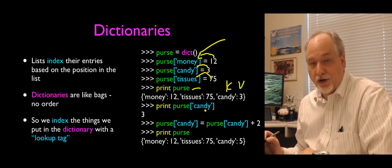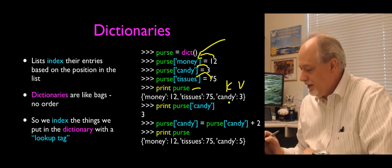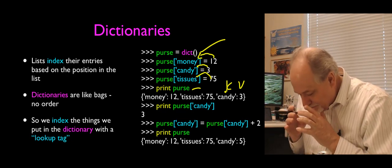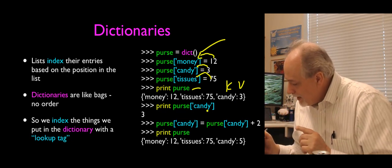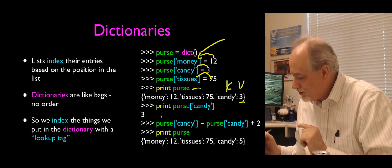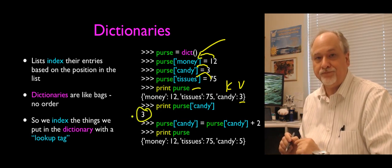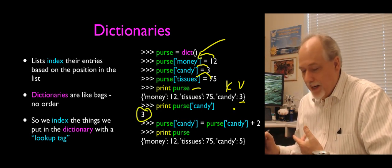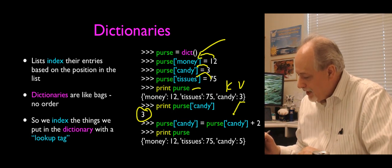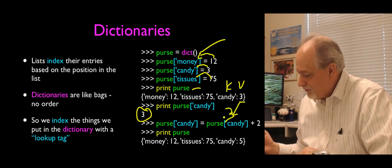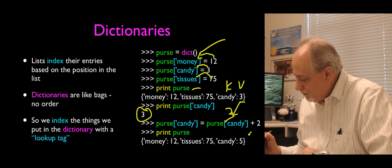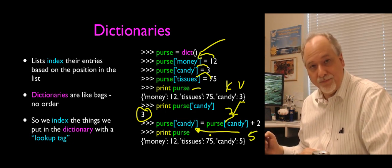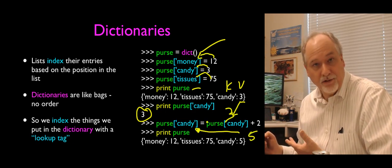I can look things up by their name — print purse sub candy. It goes and finds candy, retrieves the value which is 3, and out comes a 3. We can also put it on the right-hand side of an assignment statement. Purse sub candy equals purse sub candy plus 2 gives me 5, and stores it back in the purse under the label candy. So we see candy changing to 5.